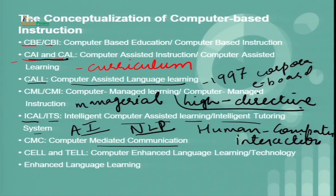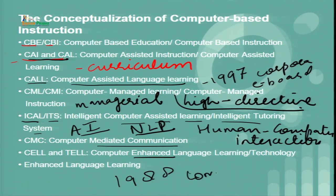Coming to the next acronym: CEL and TEL — computer-enhanced language learning and technology-enhanced language learning. CEL and TEL are also popular and in trend. They were first coined by Professor Andrew Lian in 1988, and the word 'enhanced' is used to focus a paradigm shift from computer to technology. Here, 'computer' refers to a particular setup required to operate, while 'technology' can be embraced at any point of time, irrespective of the availability of a computer.